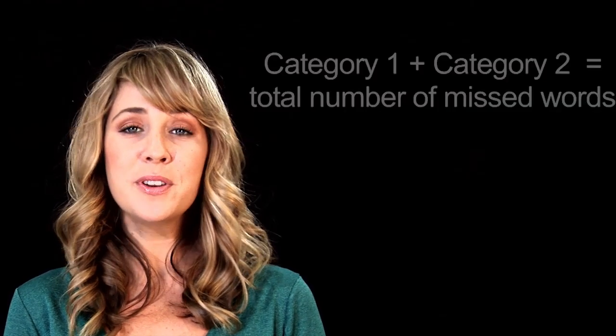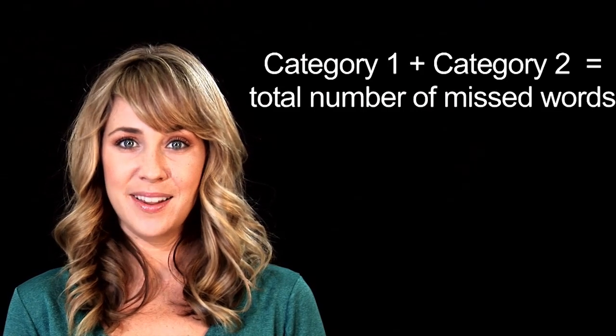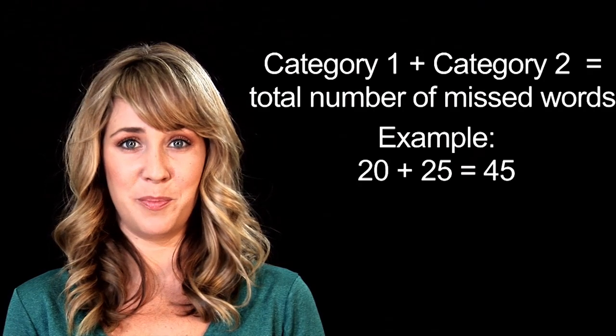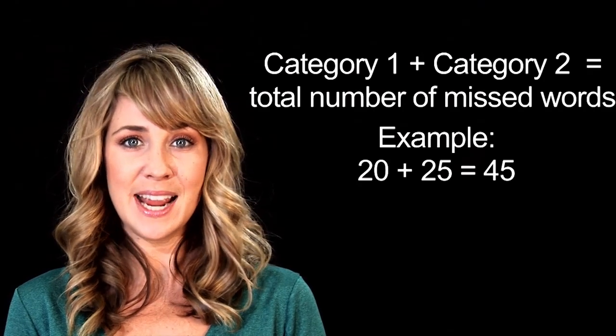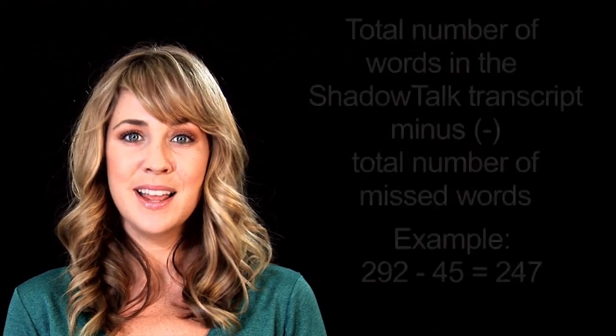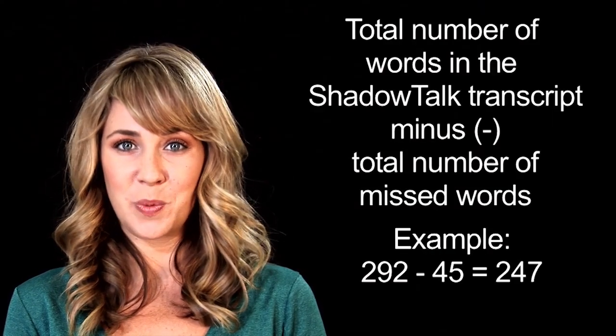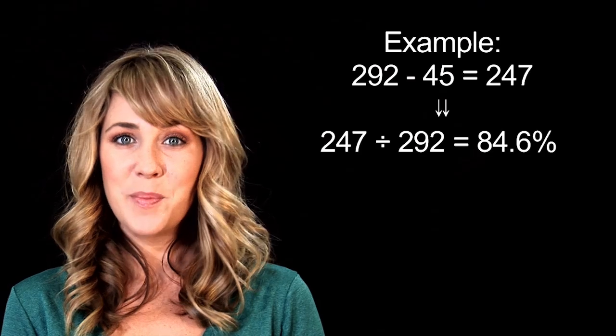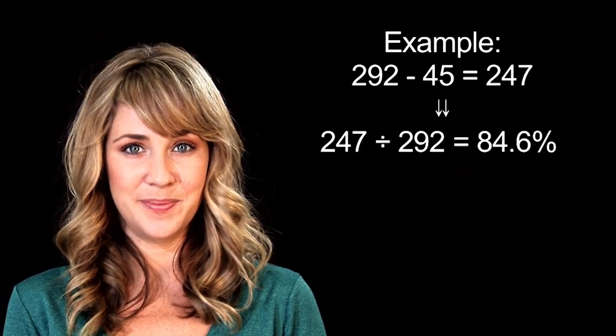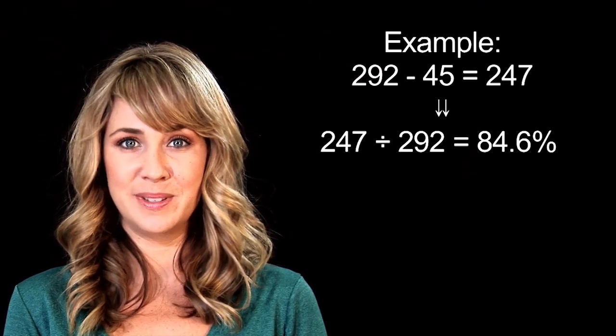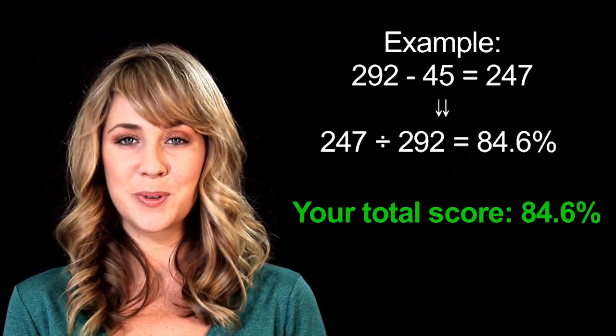If you add both numbers together, you will get the total number of missed words, or the words which other people will not be able to understand when they listen to your recorded voice. Now, subtract the total number of missed words from the total number of words in the Shadow Talk transcript, divided again by the total word count in the transcript. This is your real score in percentage terms and is referred to as your total score.